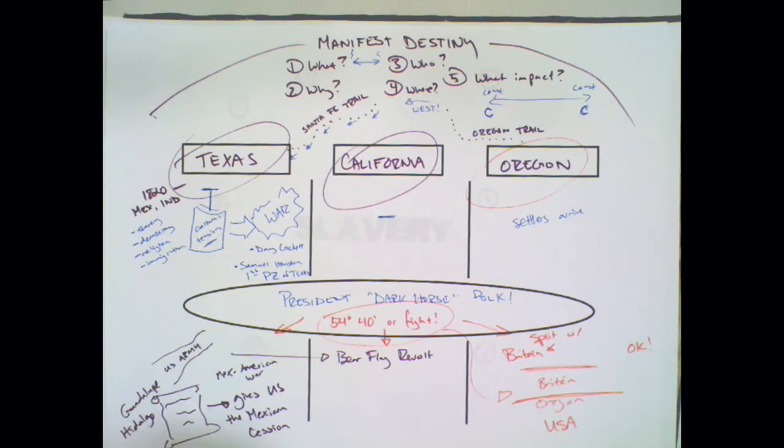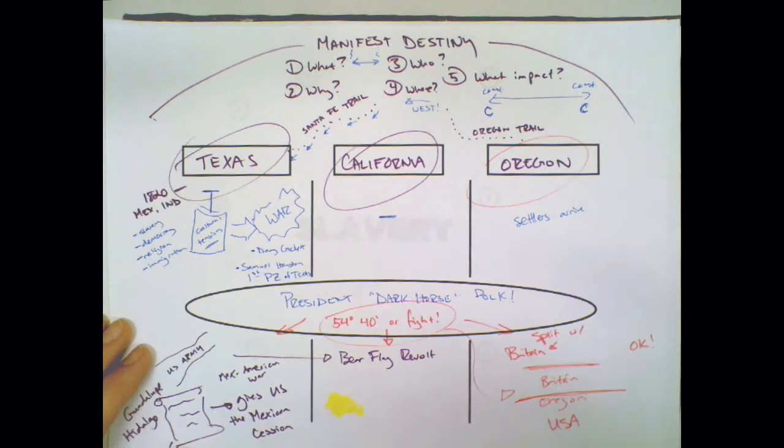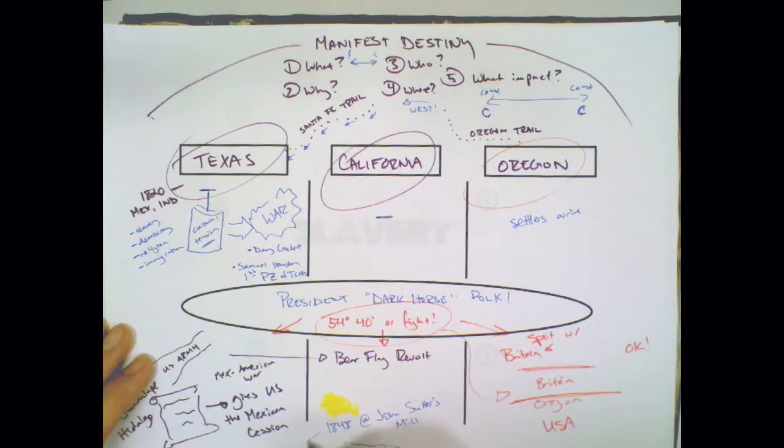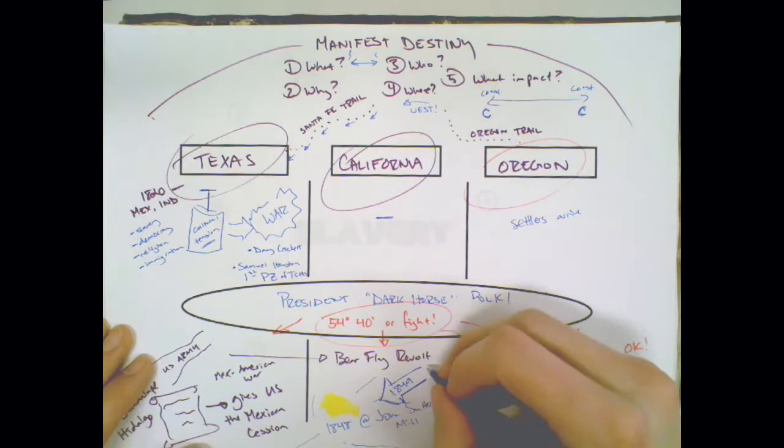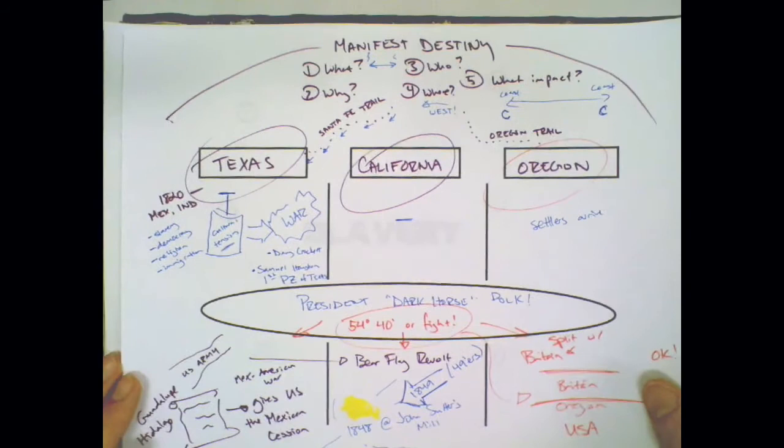With that, he has accomplished Manifest Destiny by giving us Texas, California, the Mexican Cession, as well as Oregon. Once we have California, a little shiny something is discovered out there. That's right, they discover gold at John Sutter's Mill in 1848. News spreads, and people rush to California, including the first large group of Asian immigrants. They rush in 1849, which is why these people become called 49ers.